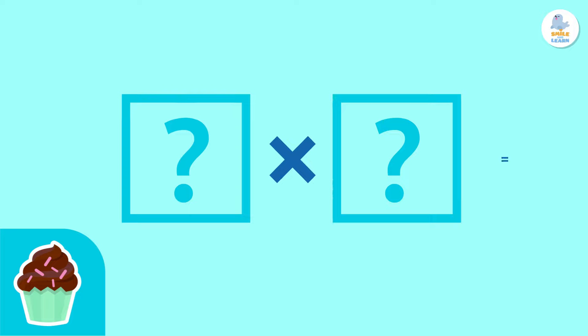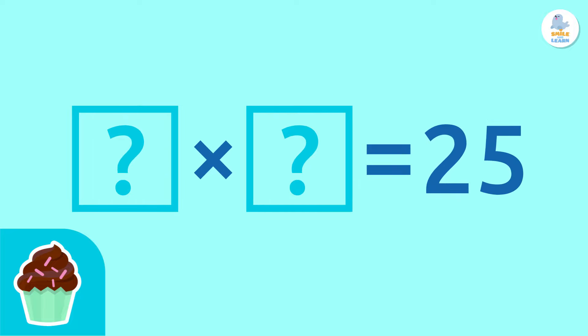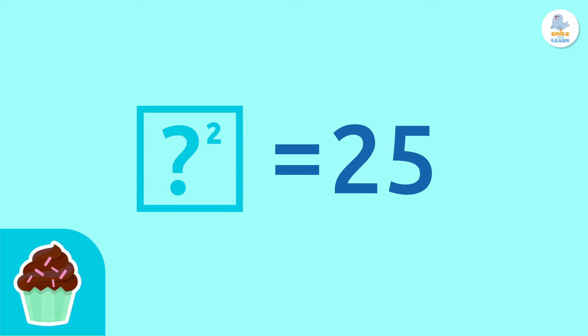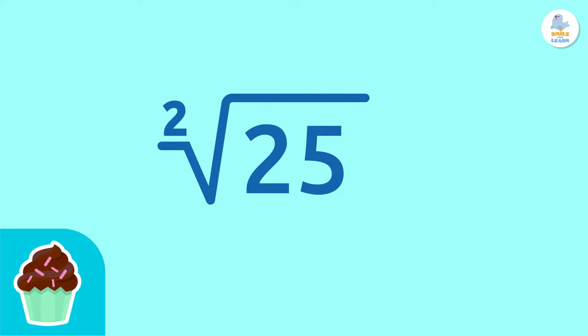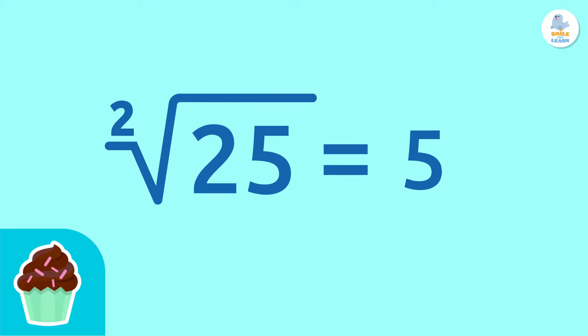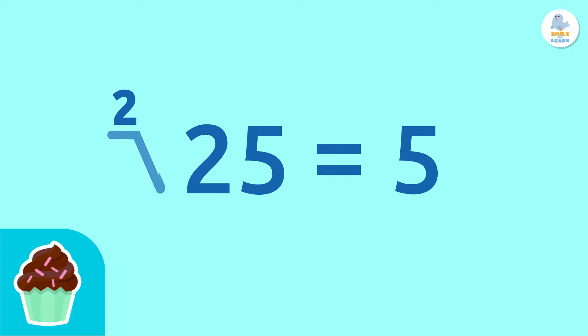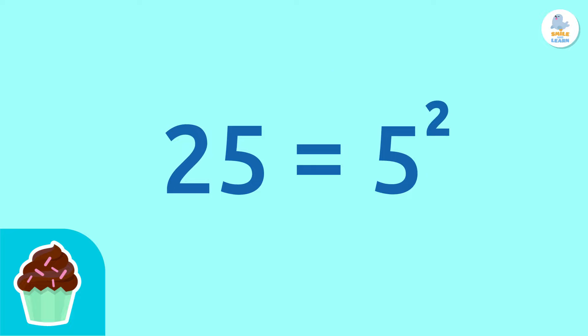To find out, we have to think of a number that when multiplied by itself equals 25. That is, a number squared that results in 25. To calculate this number, we'll take the square root of 25, which is 5. We know this because 5 squared equals 25.